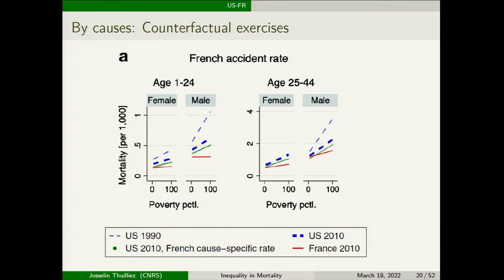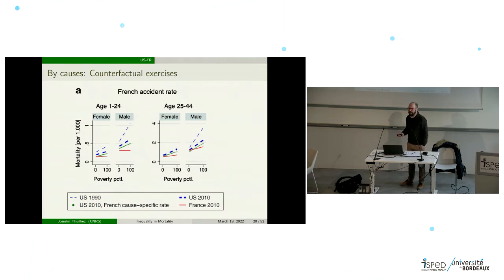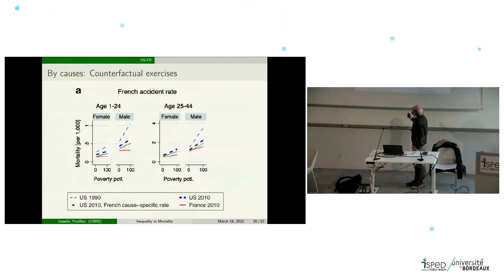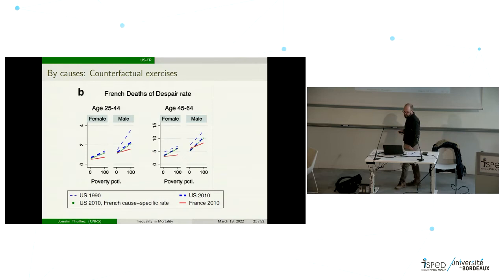We can also make counterfactual exercises to understand what would be the effect of applying a specific mortality rate by cause to the US and check what would happen to general mortality. For instance, if the US had France's accident rate in 2010, we would close the gap between France and the US by about 30–40%, meaning France is performing much better in terms of road accidents — this is true for both males and females in the relevant categories.